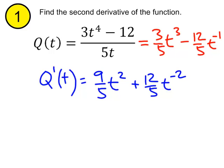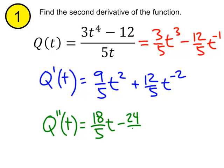And let's derive it again. Already we're seeing that was way easier than using the quotient rule. We derive it again, and we get 18 fifths t, plus, or actually it's going to go back to being a minus now, isn't it? Minus 24 fifths t to the negative third.